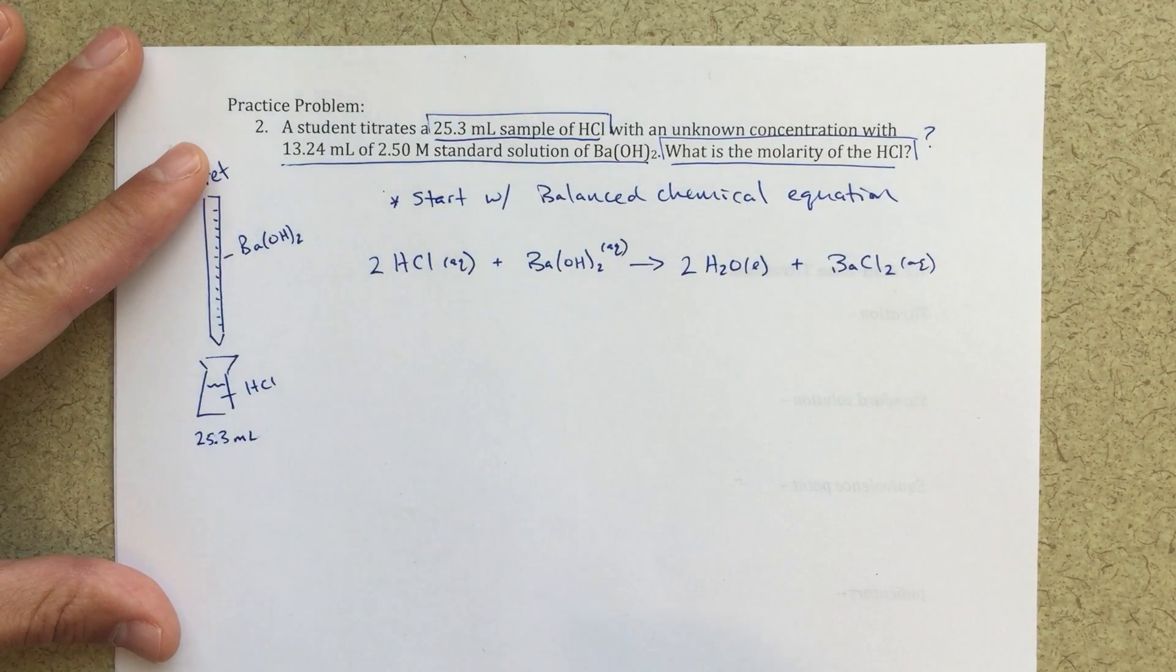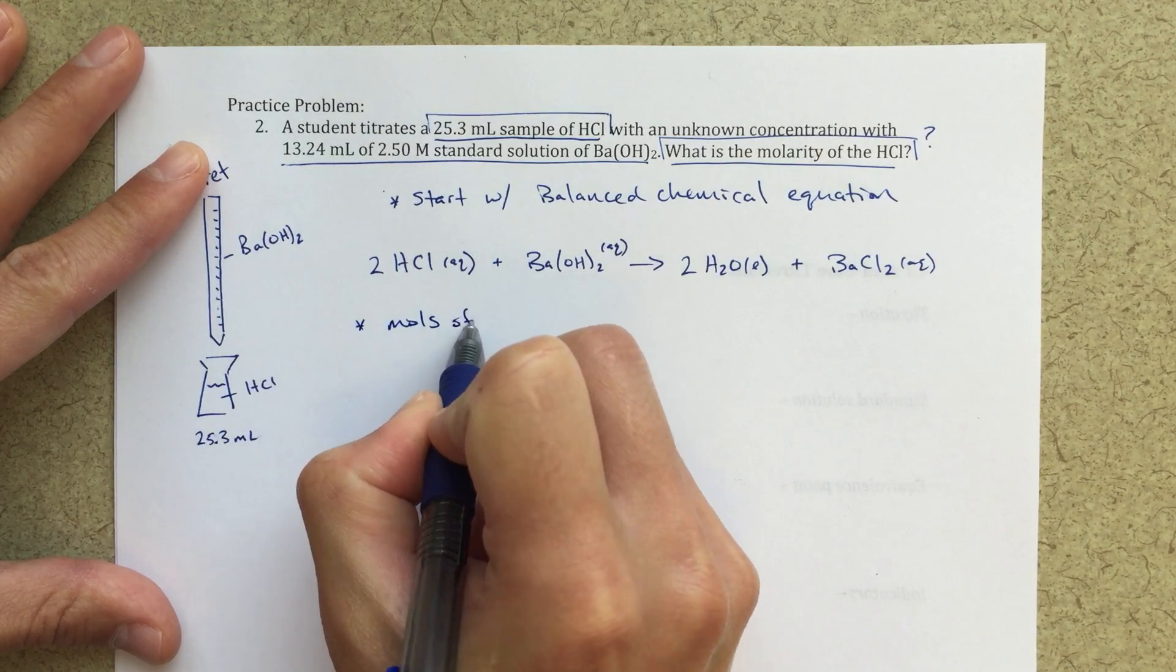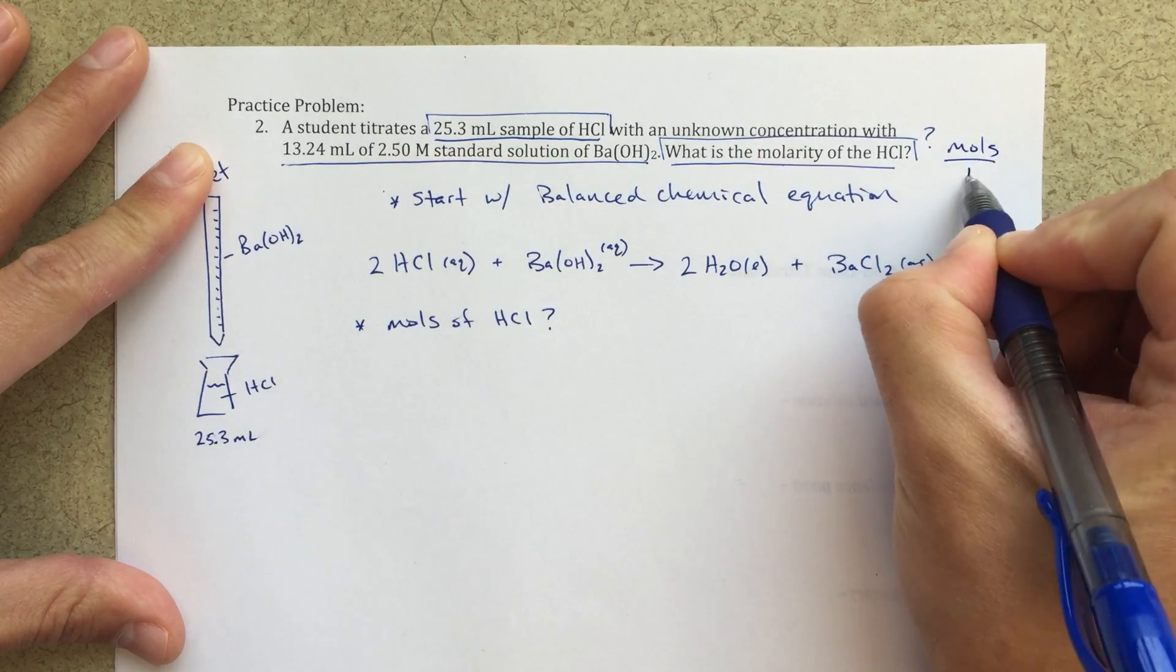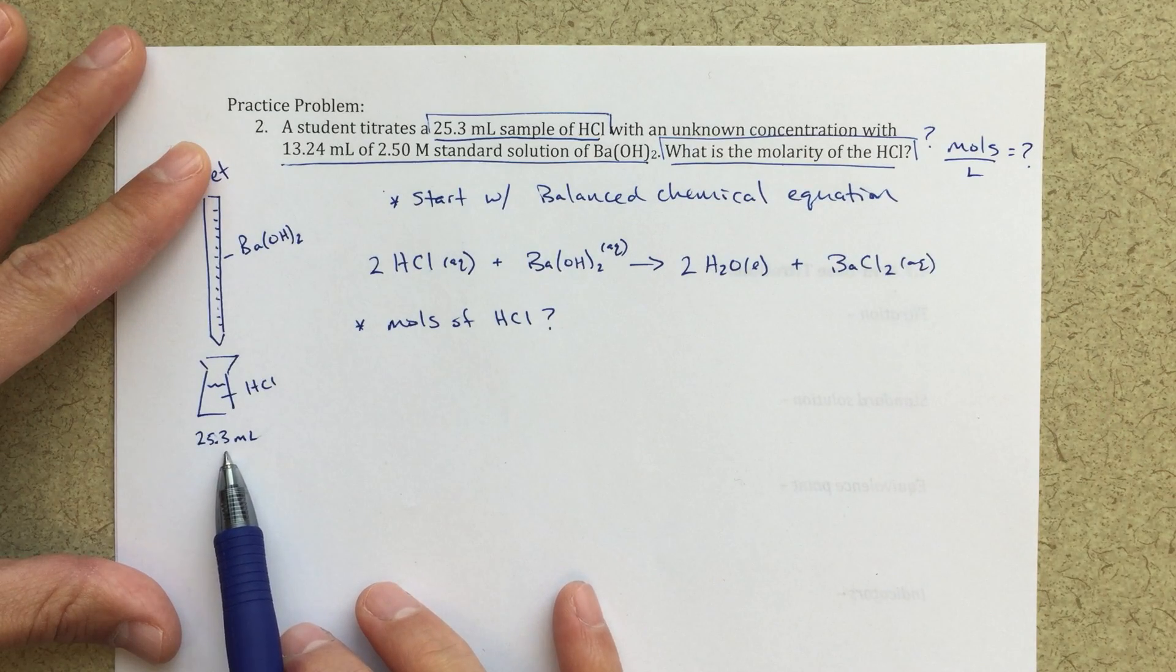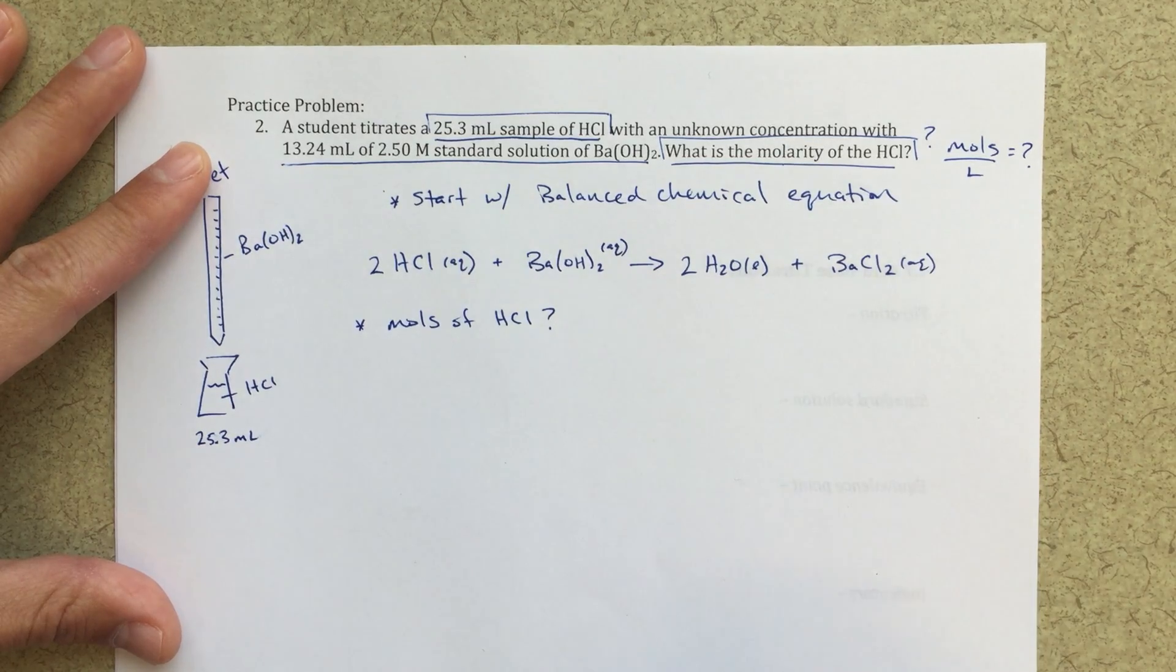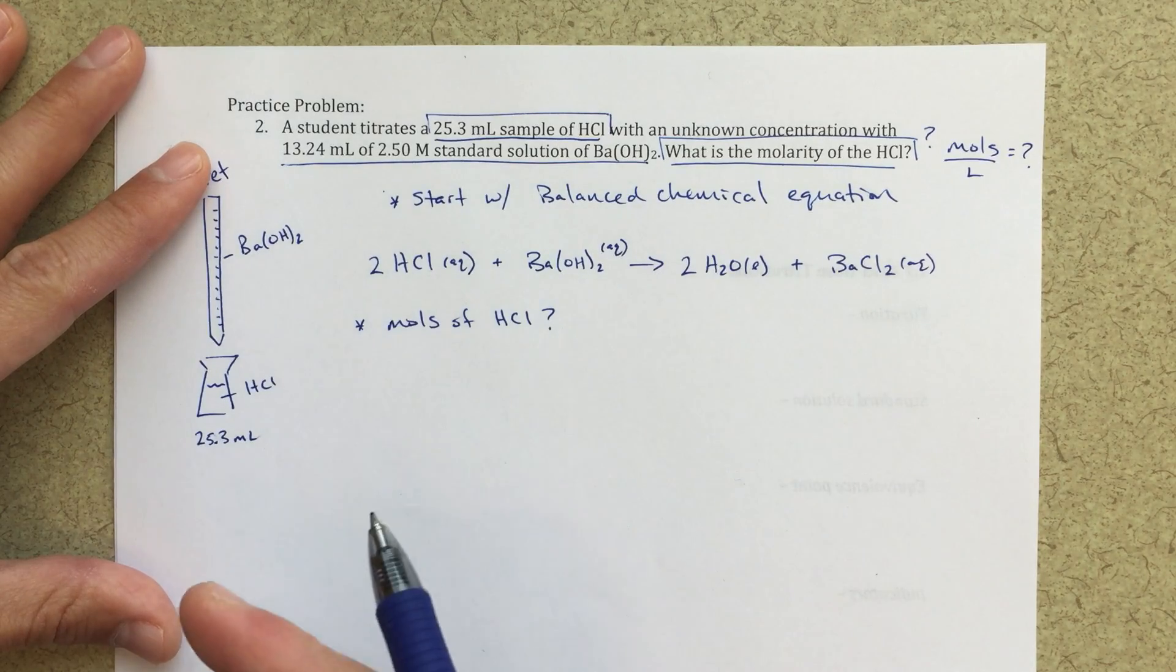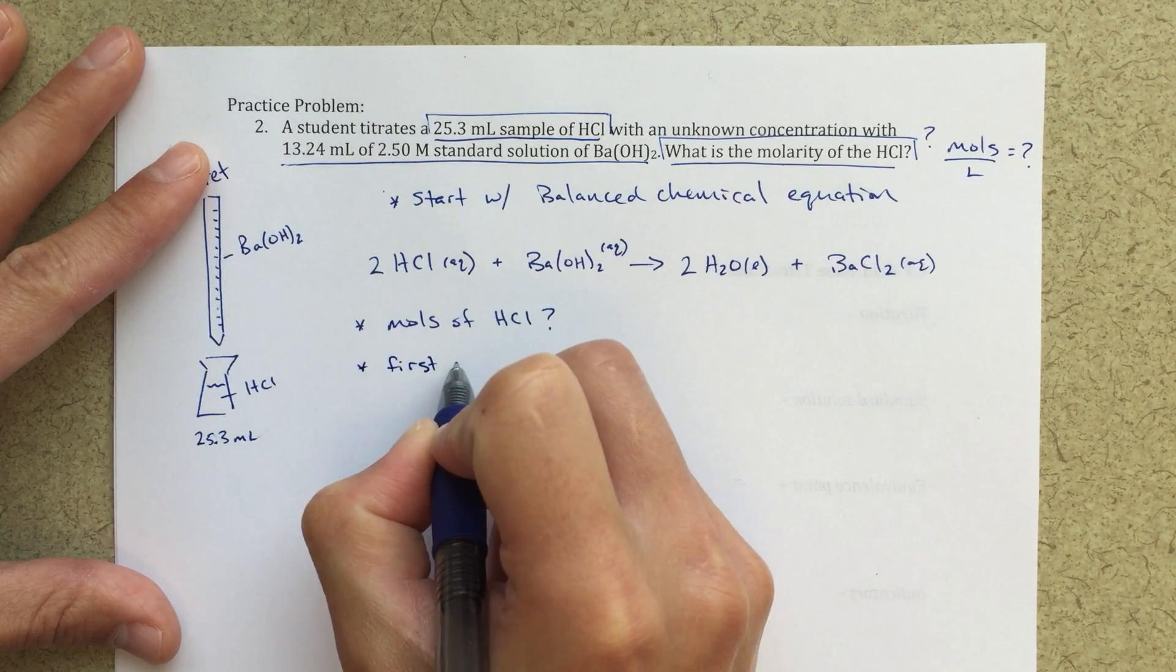The next thing that we're going to need to do is really determine the moles of HCl. And I'm saying moles of HCl because I know if I'm looking for the molarity, molarity is moles per liter. So moles over liters, right? Equals question mark. And I already know the liters, right? We're given 25.3 milliliters. That is the liters that I'm going to need to use. So my moles of HCl, that's what I'm really looking for. I know the moles of barium hydroxide. I can use this information here to find the moles of barium hydroxide. And then I'm going to correlate that moles of barium hydroxide to my moles of HCl.